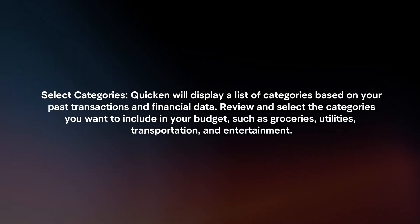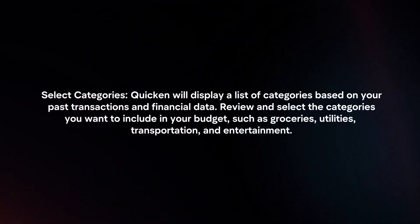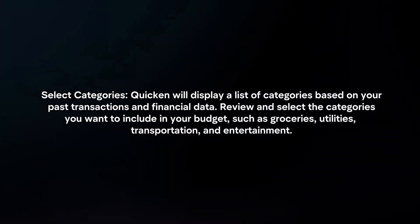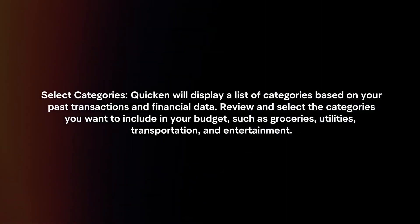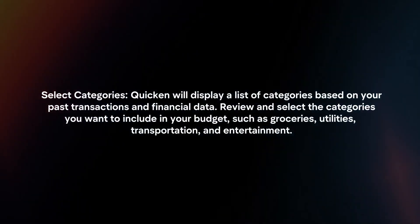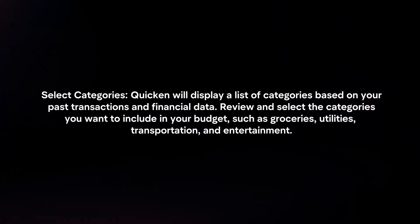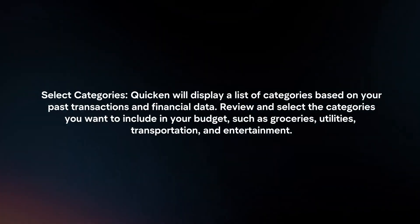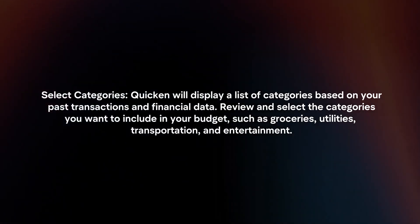Select categories. Quicken will display a list of categories based on your past transactions and financial data. Review and select the categories you want to include in your budget, such as groceries, utilities, transportation, and entertainment.